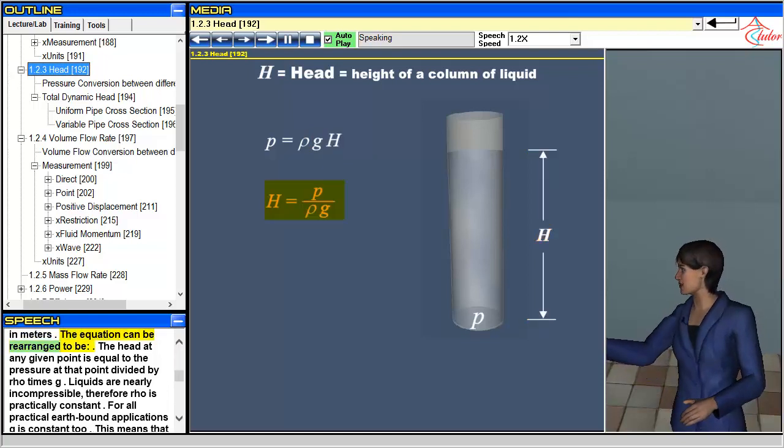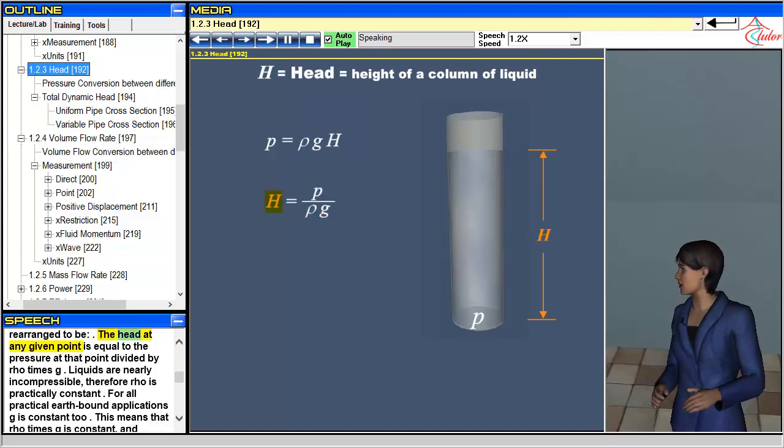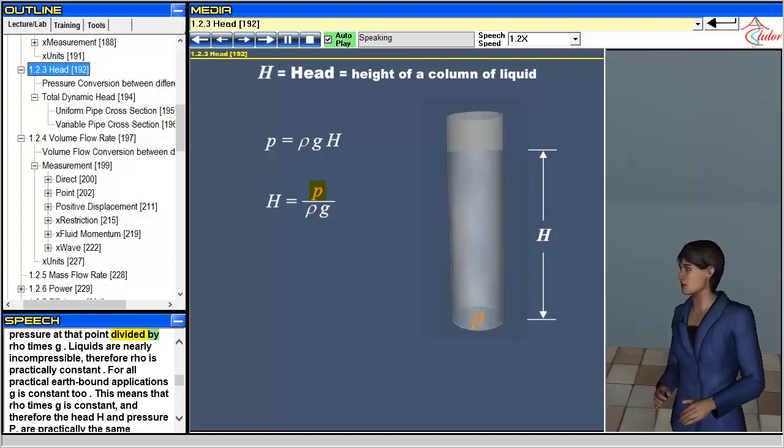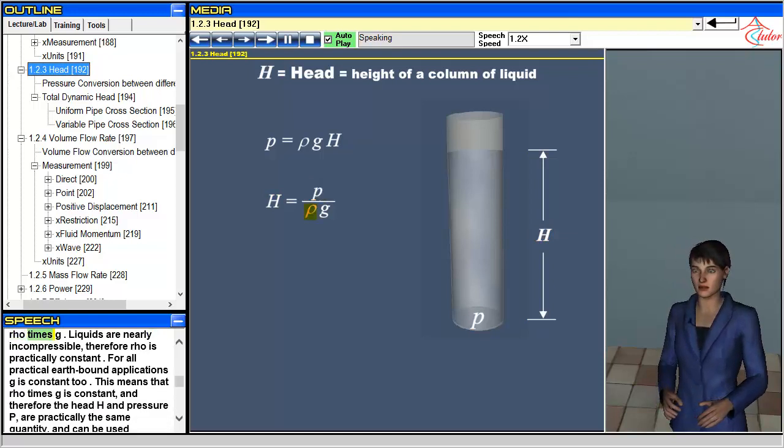The equation can be rearranged to be: the head at any given point is equal to the pressure at that point divided by rho times g.